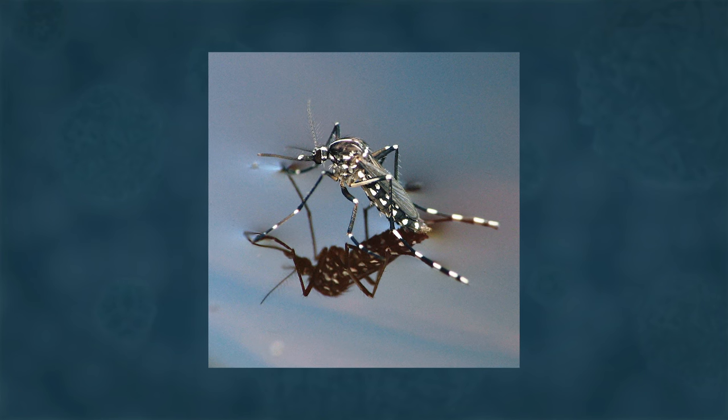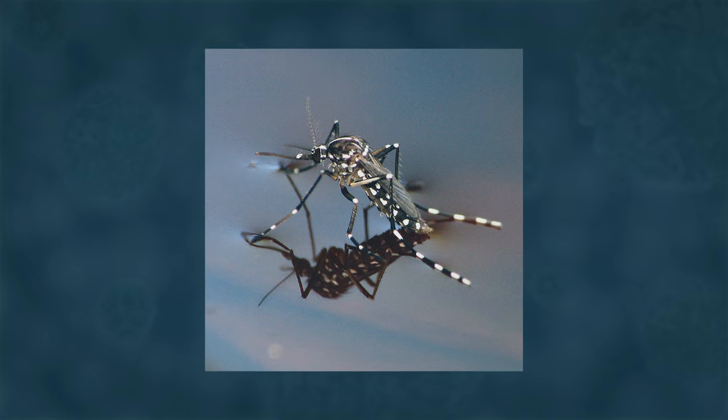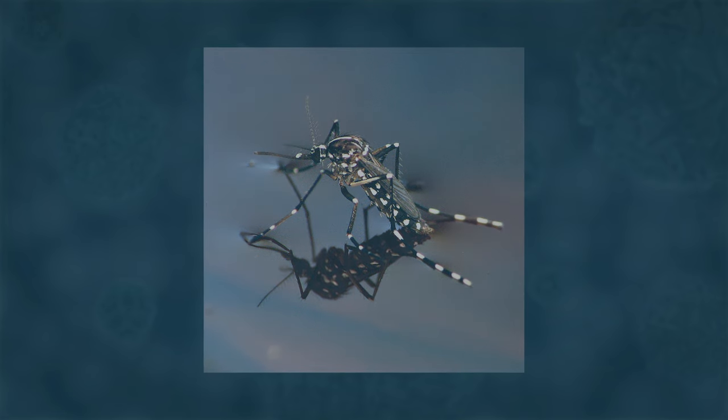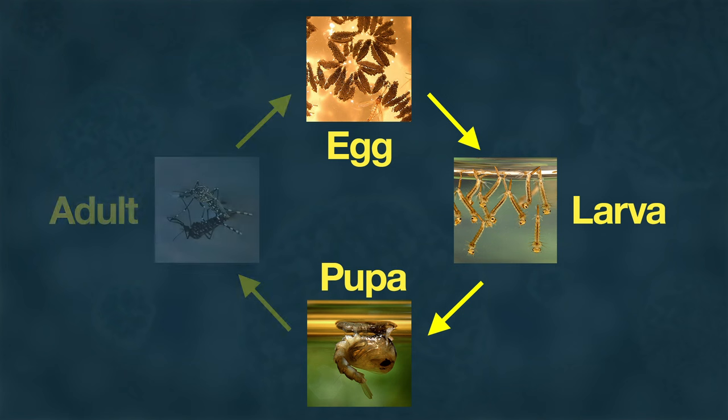The life cycle of a mosquito, like that of many other insects, has four stages—egg, larva, pupa, and adult.